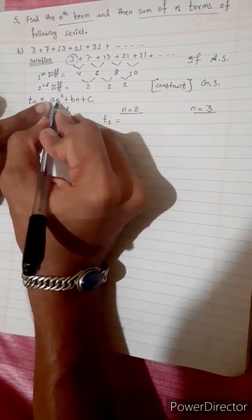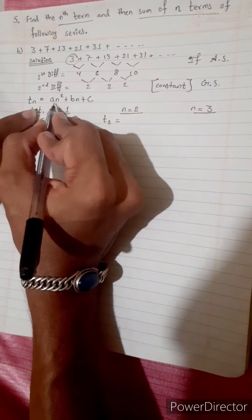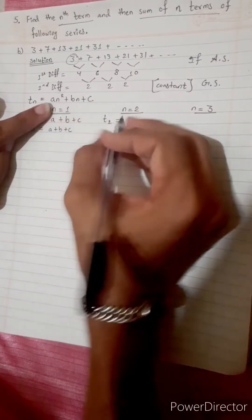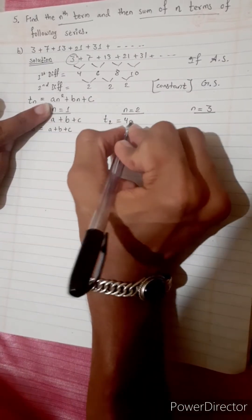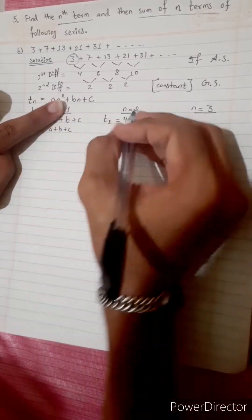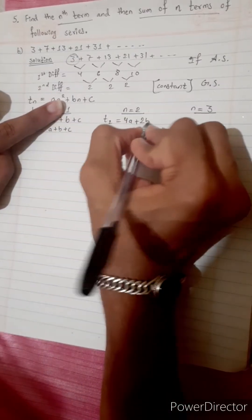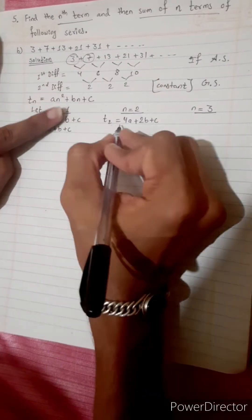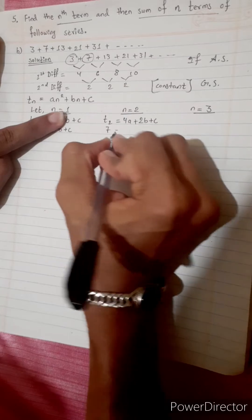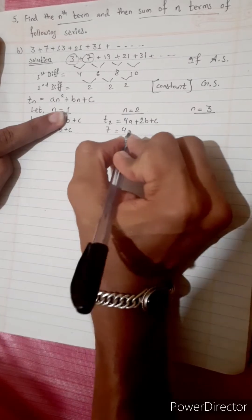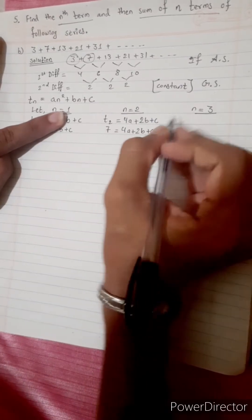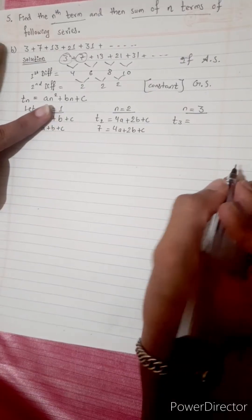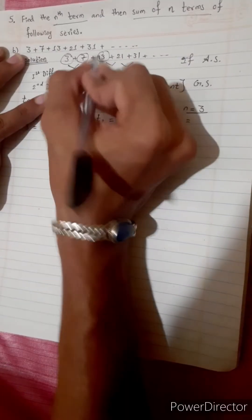For t2: 2 squared into a equals 4a, plus 2 times b equals 2b, plus c. Since t2 equals 7, we get: 7 equals 4a plus 2b plus c.